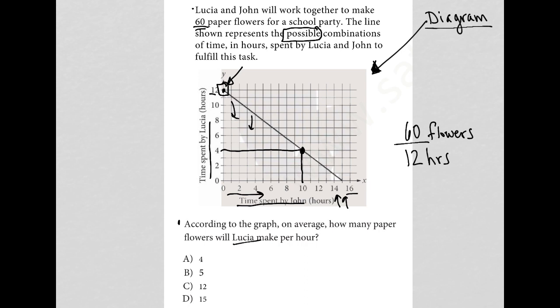So if the question's asking how many paper flowers will Lucia make per hour, then I could just use this equation, this ratio, to figure out the answer. I can reduce this fraction by 12. 12 goes into itself once. So I get my unit to be one hour or per hour, which is exactly what I want. And 12 goes into 60 five times. So by reducing that ratio, I get that Lucia makes five flowers per hour.